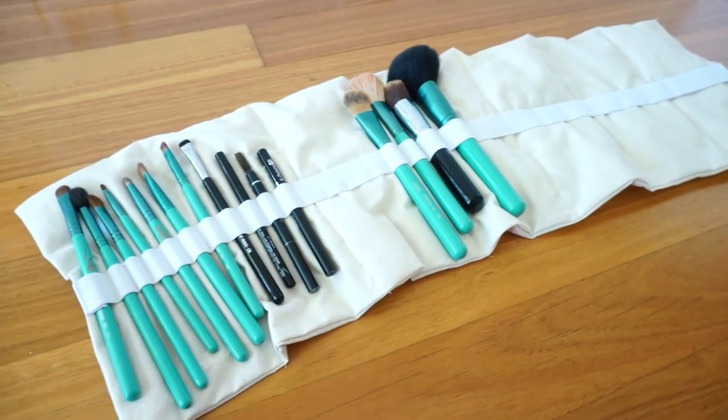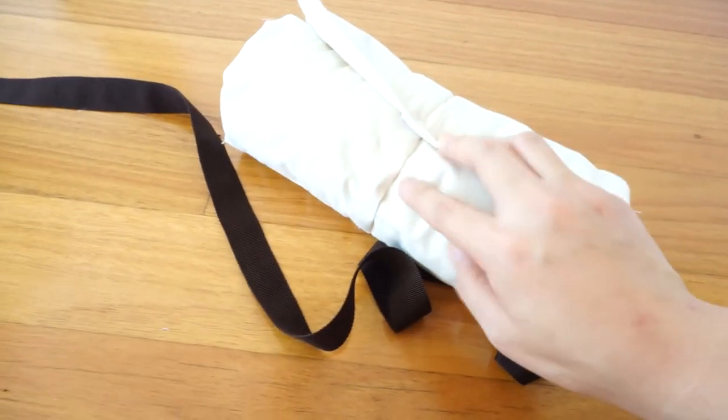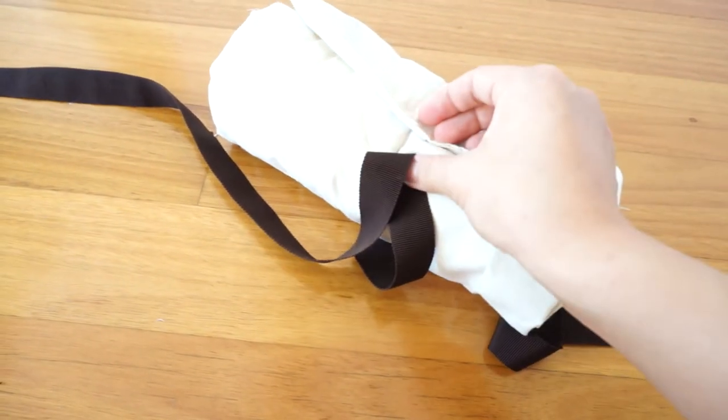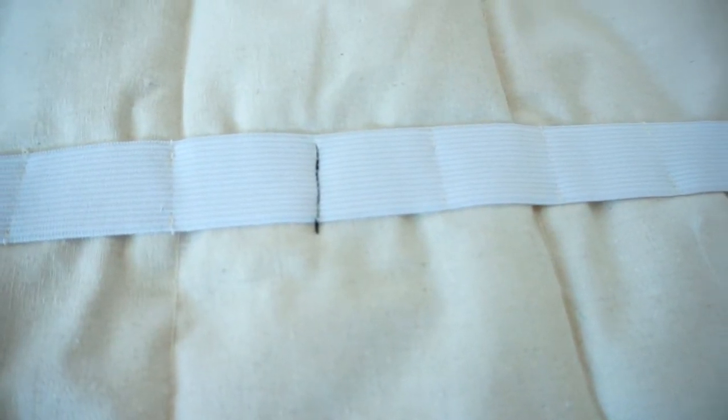To sew on the ribbon, I half filled the makeup brush holder and rolled it up. About 3cm away from the edge is where you should sew your ribbon. You must sew where you have already sewn for the slots or you will ruin one of your slots.